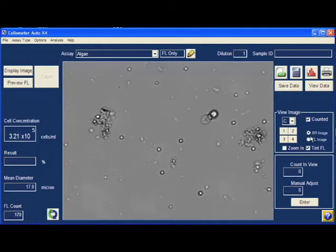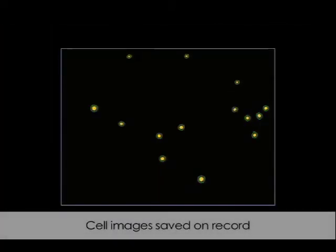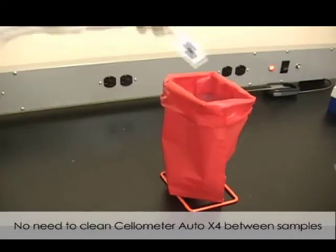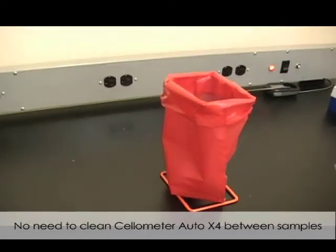Cell images are saved as a record for each sample. They can also be used to reanalyze your data. Counted algae cells are indicated by outlines for confirmation. The all-plastic counting chamber is easily disposable after use.